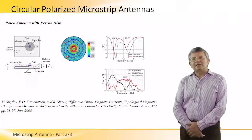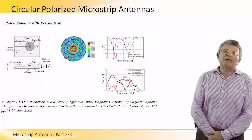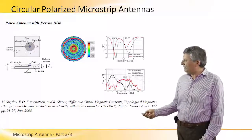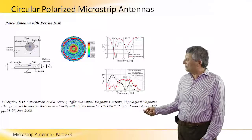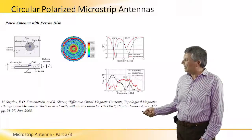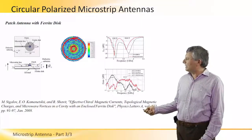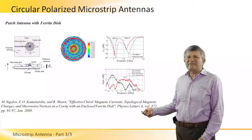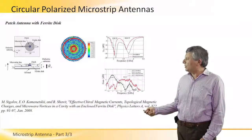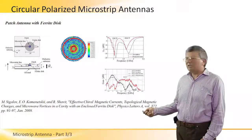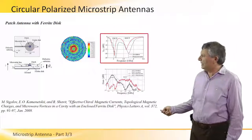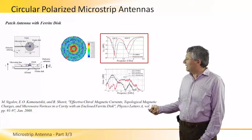What's interesting about the ferrite disk is that it has anisotropic features, and accordingly it imposes rotation of the electric fields inside the cavity domain, such that at one frequency the field is rotated counterclockwise, and at another frequency the field is rotated clockwise. Therefore, by simply varying the frequency of operation of the patch, we obtain two types of circular polarization — right-hand or left-hand.